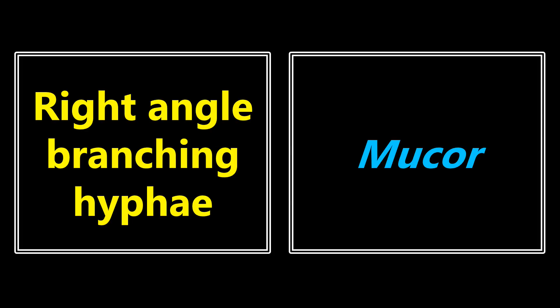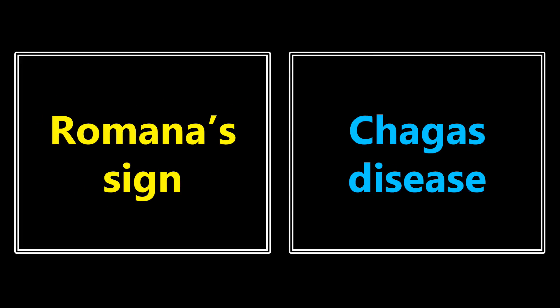Right-angle branching hyphae: there are a couple of organisms that display this, but the main one you're going to see on your exam is Mucor. Romaña's sign: if you see this, it's going to be talking about Chagas disease — especially if a person traveled to South America recently, think Chagas disease.